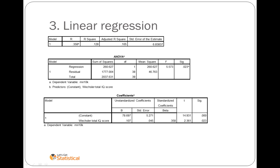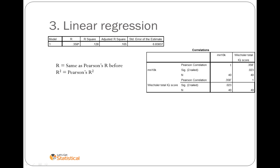We then get a linear regression output which gives us these three tables. In SPSS the first being the model summary, the second being the ANOVA table, the third being the coefficients. In this top table we have the R which is the same as Pearson's R before and the R squared is the same as squaring that number.